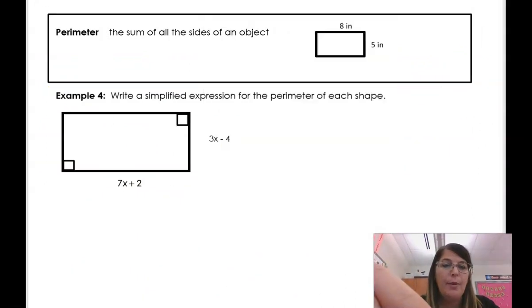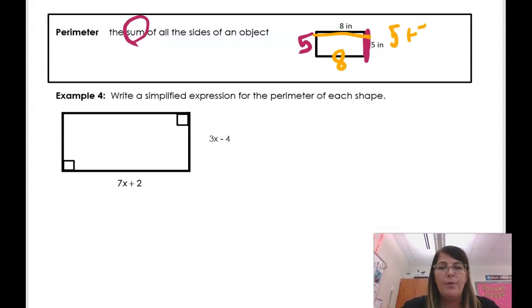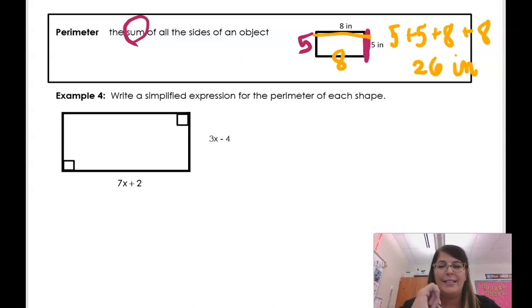Okay. So perimeter is the sum of all the sides. So you can find the perimeter by adding up all the sides. But all the sides. So if this side here is 5, this side over here is 5. And if this side here is 8, this side over here is 8. So I can say 5 plus 5 plus 8 plus 8. And I can get that my perimeter is 26 inches. I would need 26 inches of fence if I was going around this.